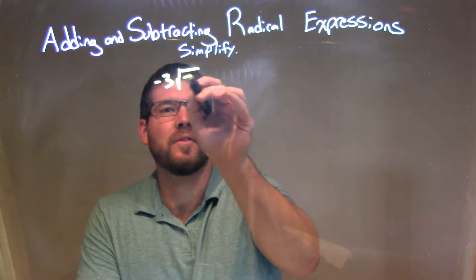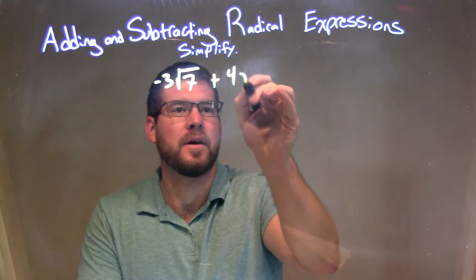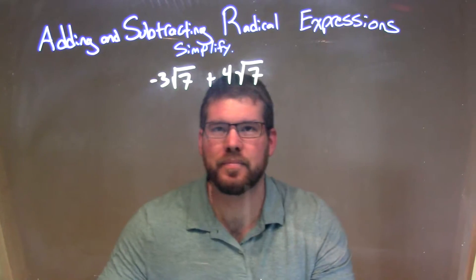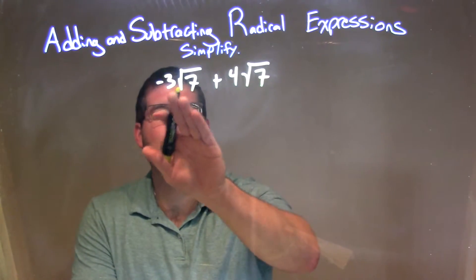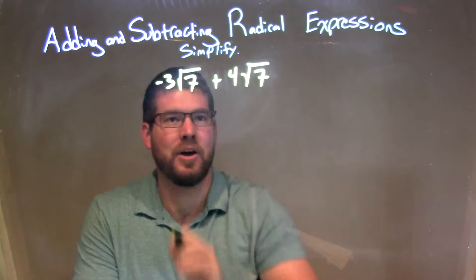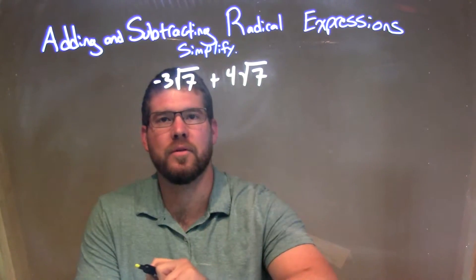Negative 3 times the square root of 7 plus 4 times the square root of 7. Since both of them have a number multiplied by the same square root of 7, we can just add the numbers in front of the square root of 7.